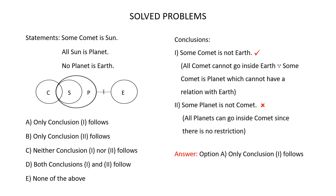Some comet is sun means in the Venn diagram there has to be a partial overlap between comets and sun. All sun is planet means all of the sun should be inside planets. No planet is earth — draw a circle for earth and draw a line with a cross from planets to earth to indicate that no planet is earth. So this is the Venn diagram for the given statements.